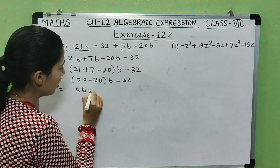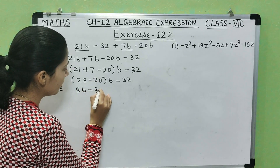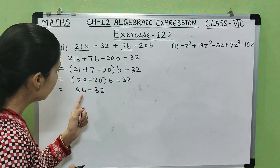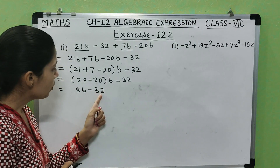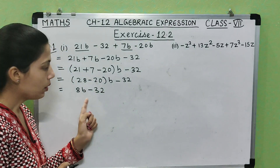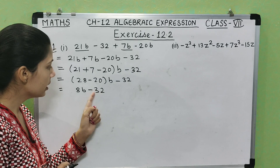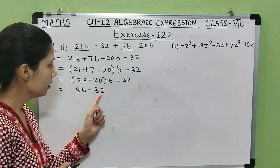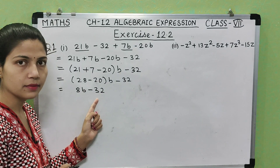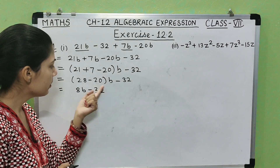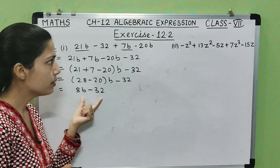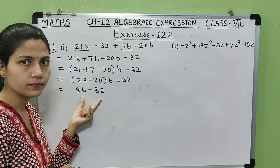28 minus 20 is 8b, minus 32. Now see, these two are unlike terms — one is a constant and one has a variable — so they are unlike terms and we cannot simplify this further. So 8b minus 32 will be the answer.